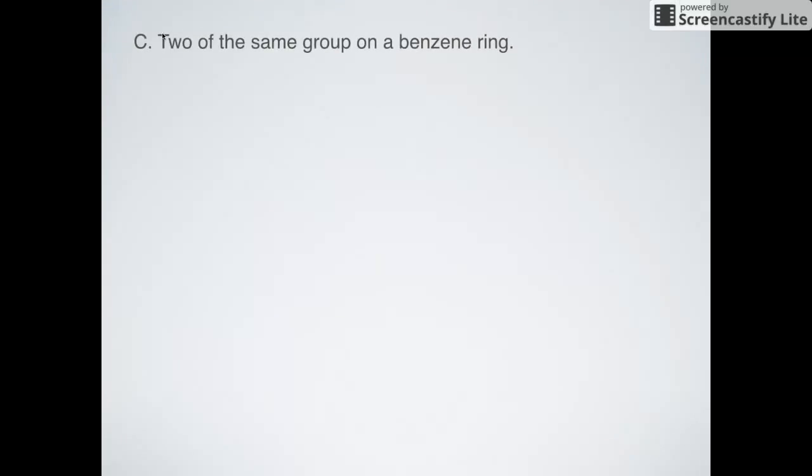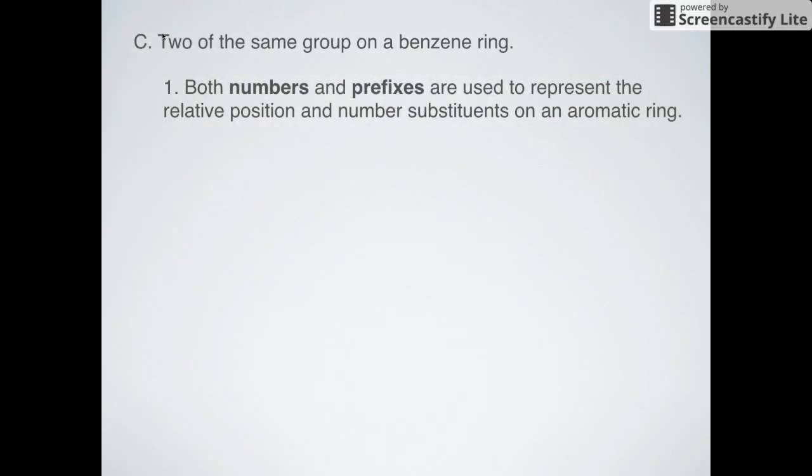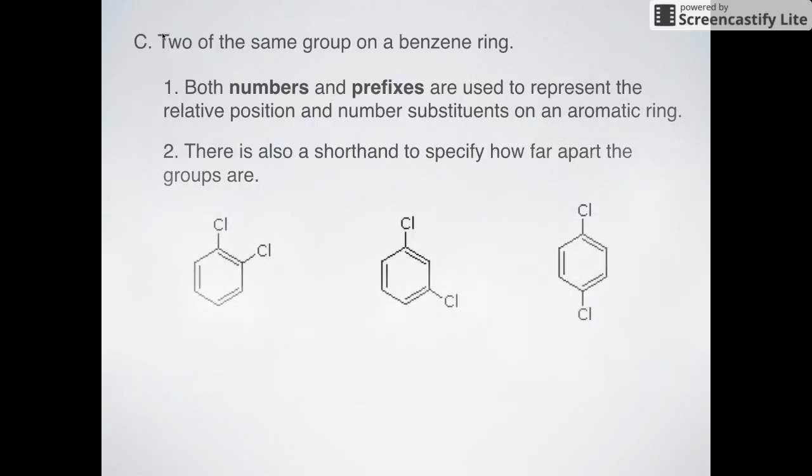So let's say that we wanted to name something that has two of the same substituent on a benzene ring. So how do we name and number those things? Well, both of the numbers and the prefixes that we've been talking about are used to represent this and where they're located on the aromatic ring. There is a shorthand way of doing this, but we're going to talk about really this way first, and then we'll get to the shorthand after. So if you think about it, if we have something as simple as just two chloro groups, there are really only three ways of arranging that on a benzene ring. I can have them two carbons apart, I can have them three carbons apart, or I can have them four carbons apart. So simply put, we would call that 1,2-dichlorobenzene. The one and the two are because they are two carbons apart. That would be carbon one, that would be carbon two.